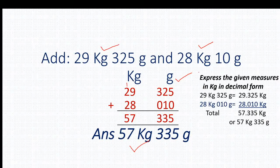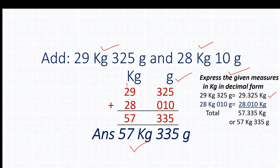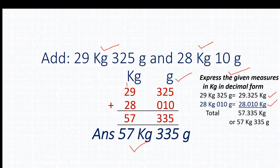We can also do this same question another way. You have to convert kg and gram into kg. So 29 kg 325 gram equals 29.325 kg and the next weight 28 kg 010 gram equals 28.010 kg. After adding these two we get 57.335 kg. You can also write 57 kg 335 gram.